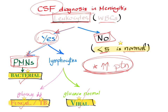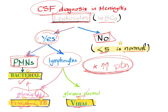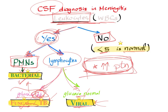To differentiate: if the predominant cells are neutrophils (PMNs), that's bacterial. If the predominant cells are lymphocytes, then look at the glucose. Low glucose suggests fungal or TB meningitis. Normal glucose suggests viral meningitis. Note that glucose is also decreased in bacterial meningitis. Remember: all types of meningitis have high protein.